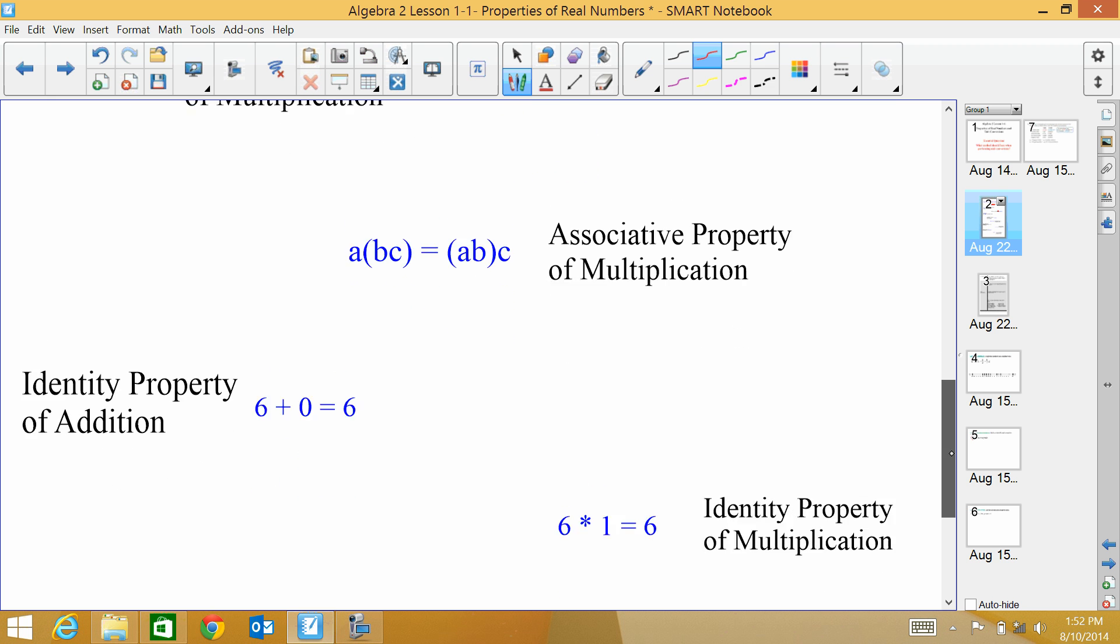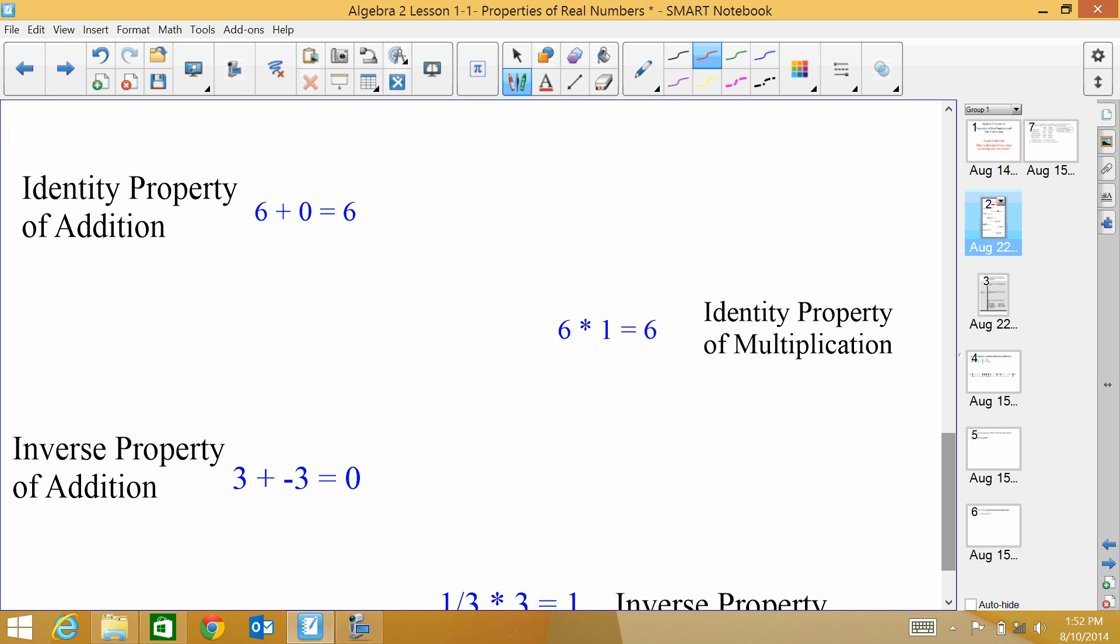Here's some new ones. Identity property of addition. Now, identity is when it doesn't change. So like if you think about your identity, it never really changes. So just like Superman, it's Clark Kent. He's still Clark Kent. It never changes. So that's like identity. So when I start with a 6, I should end with a 6. And when I'm adding, if I want to keep the number the same, then I would add 0 to whatever number I'm doing. So anytime you add 0 to a number, that's identity property because the number stays the same.